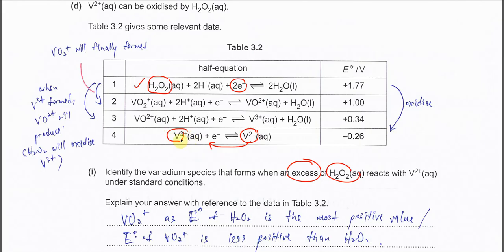When V³⁺ forms, it will follow equation 3 and is further oxidized to VO²⁺. When VO²⁺ forms, it will follow equation 2 and is further oxidized to VO₂⁺. Because H₂O₂ is in excess, the reactions will continue until it forms VO₂⁺.